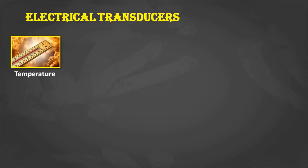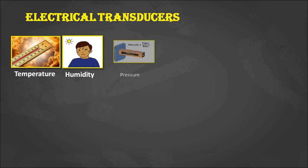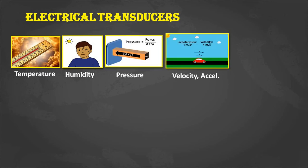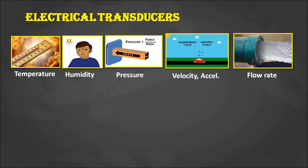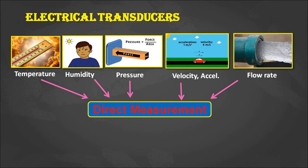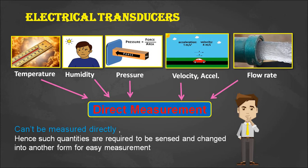Most of the parameters we need to measure are temperature, humidity, pressure, velocity or acceleration, and flow rate — these are mostly physical or mechanical quantities. But direct measurement of these physical or mechanical quantities is not possible. Hence we have to convert those quantities into another form for easy measurement, and that can be done by electrical transducers.